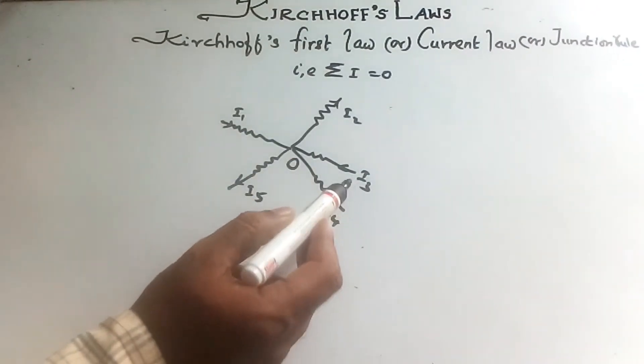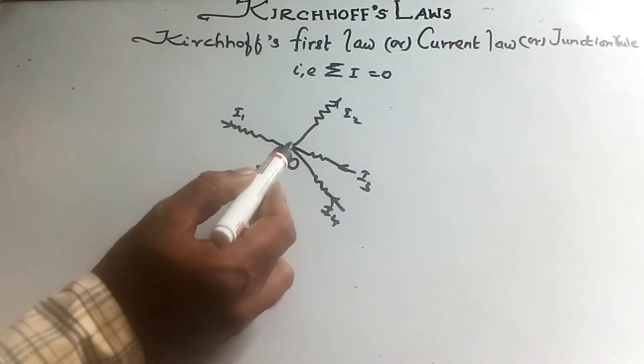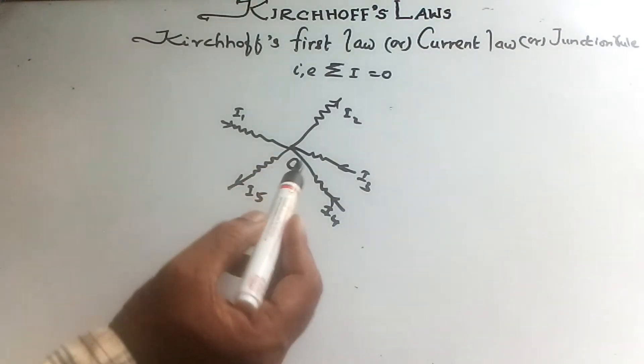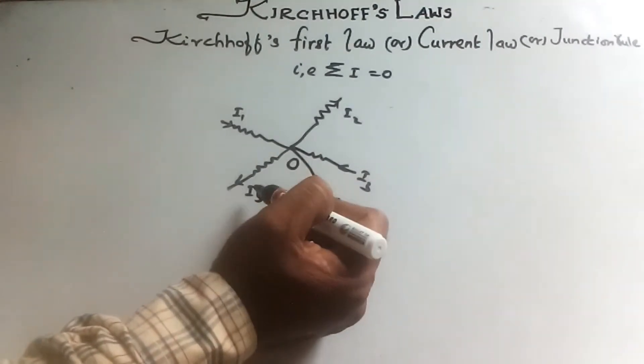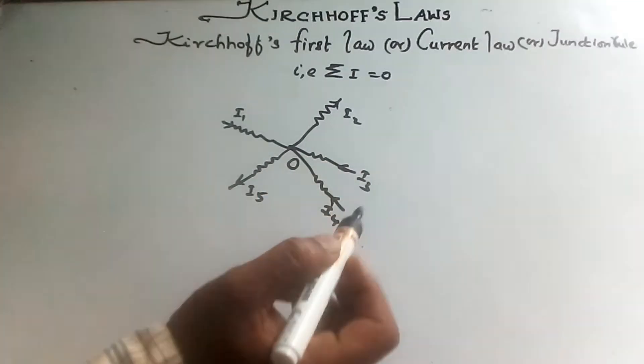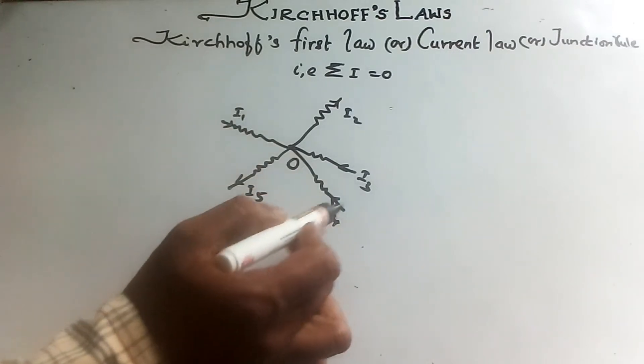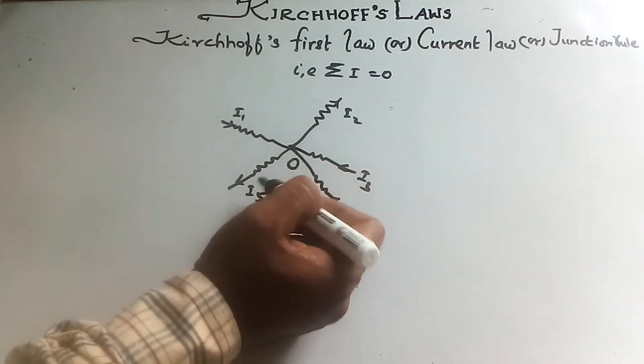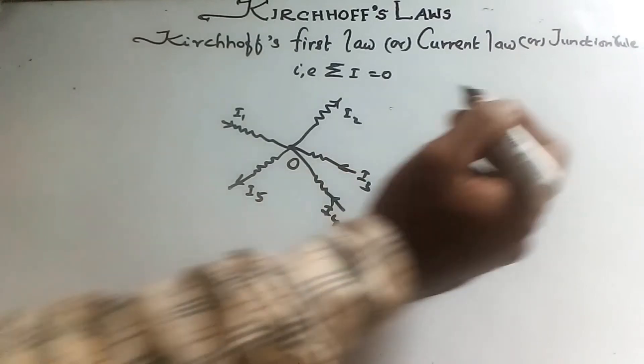I1, I3, I4 are the currents going towards the junction, while I2 and I5 are leaving from the junction. That is, I1, I3, I4 are incoming currents while I2 and I5 are outgoing currents.